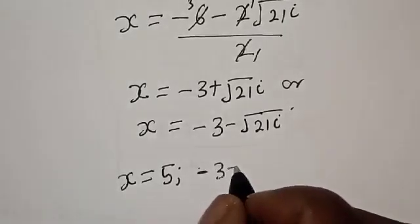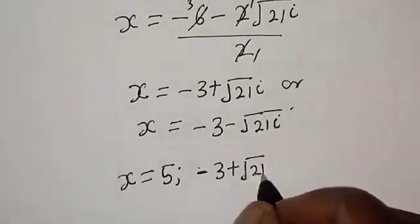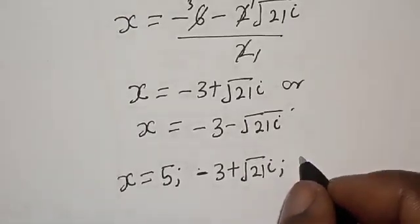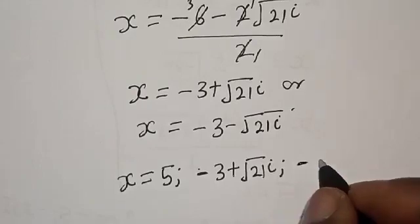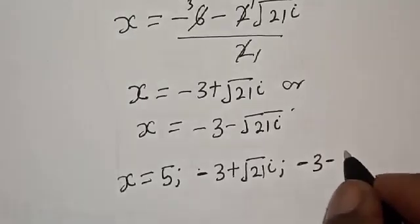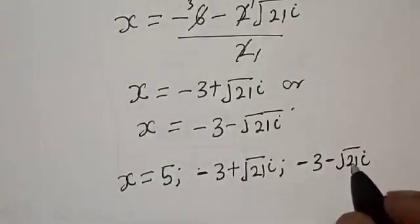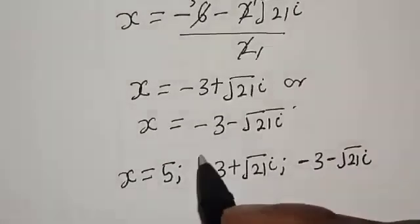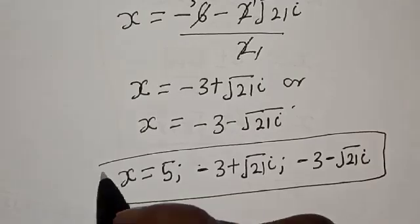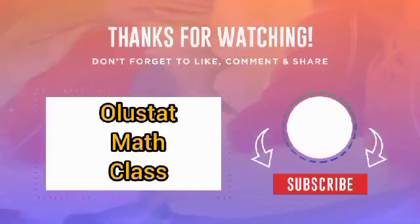Therefore our final answers, the roots of this equation, are: s equals 5, s equals negative 3 plus root 21 times i, and s equals negative 3 minus root 21 times i. That is our final answer. If you have enjoyed the class, please don't forget to like, share, comment, and subscribe. Thank you.